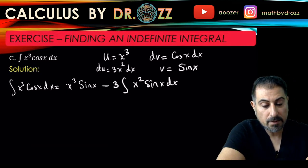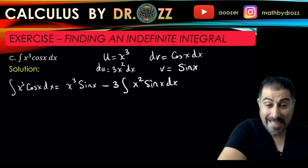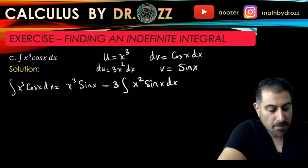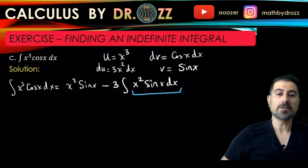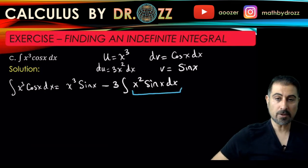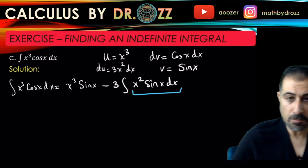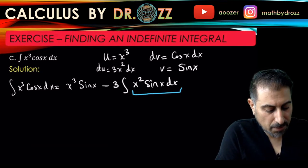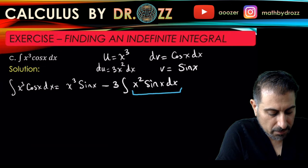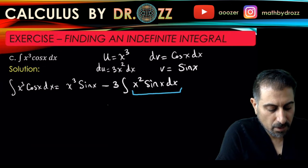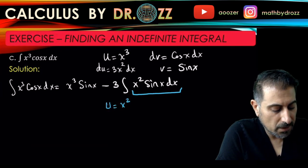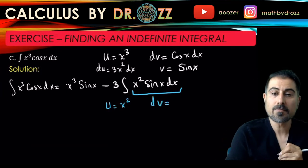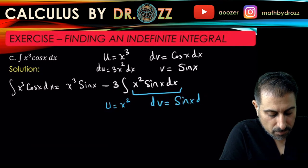Now I have another integral where I can use the LIATE. Why? Because I still have polynomial against a trig function. So x squared sine x, I'm going to use another integration by parts here. But this time the polynomial is x squared. I'm going to use a different color for this different integration by parts formula, so dv is going to be sine x dx.